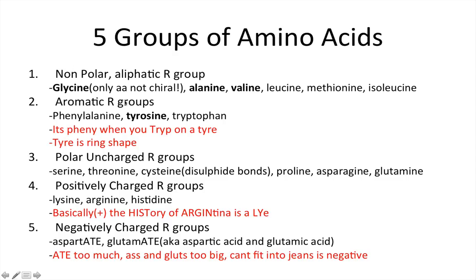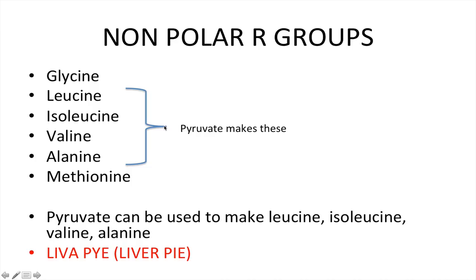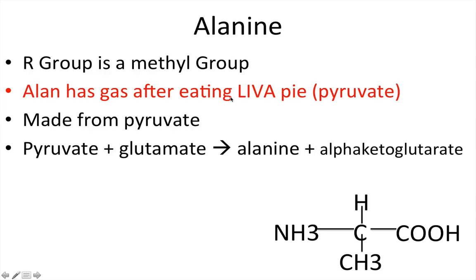Now let's look at common themes of the nonpolar aliphatic amino acids. Pyruvate is used to make a lot of them — specifically leucine, isoleucine, valine, and alanine. The memory aid is 'liver pi' or 'liva pi': pyruvate makes L-I-V-A. Alanine's R group is a methyl group — think of methyl gas — so: 'Alan has gas after eating liver pi,' meaning alanine is made from pyruvate.